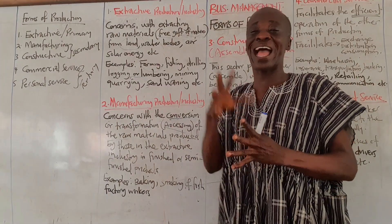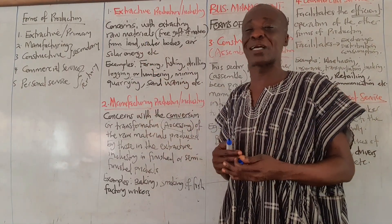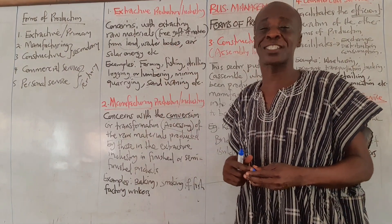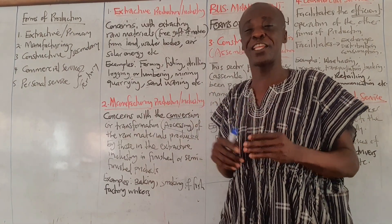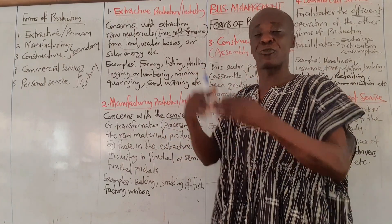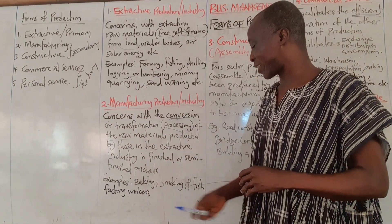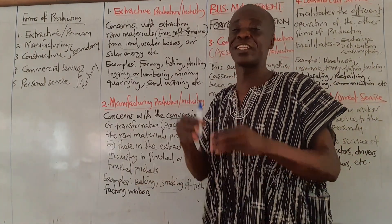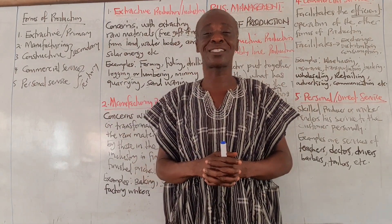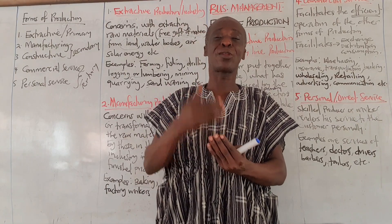The manufactured products and raw materials come together to form the next stage. In the manufacturing sector they will either come out with a finished product or a semi-finished product. If it is a semi-finished product, it has to be combined with other semi-finished or finished products and raw materials to form a whole that is useful. Examples include baking, smoking fish, factory workers, and companies like Nestlé Ghana.